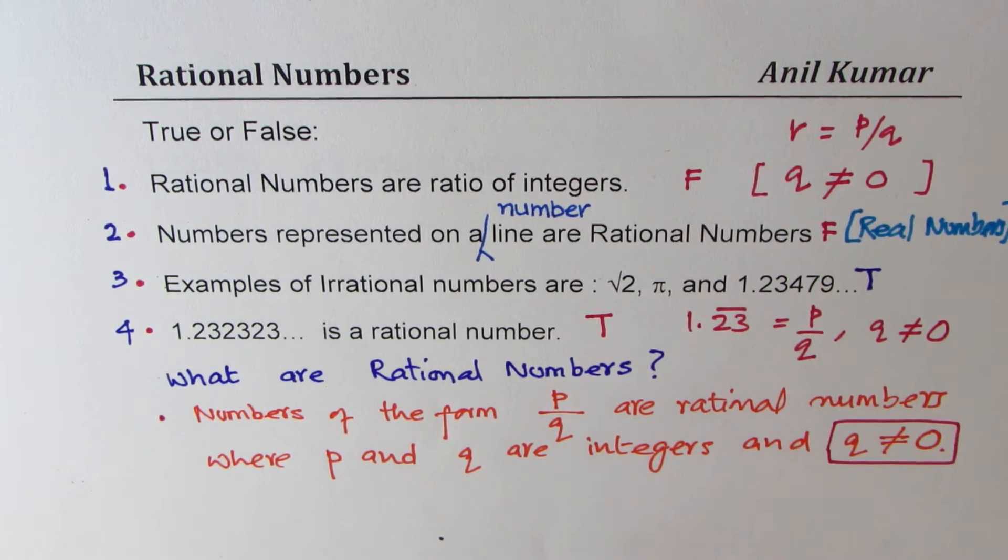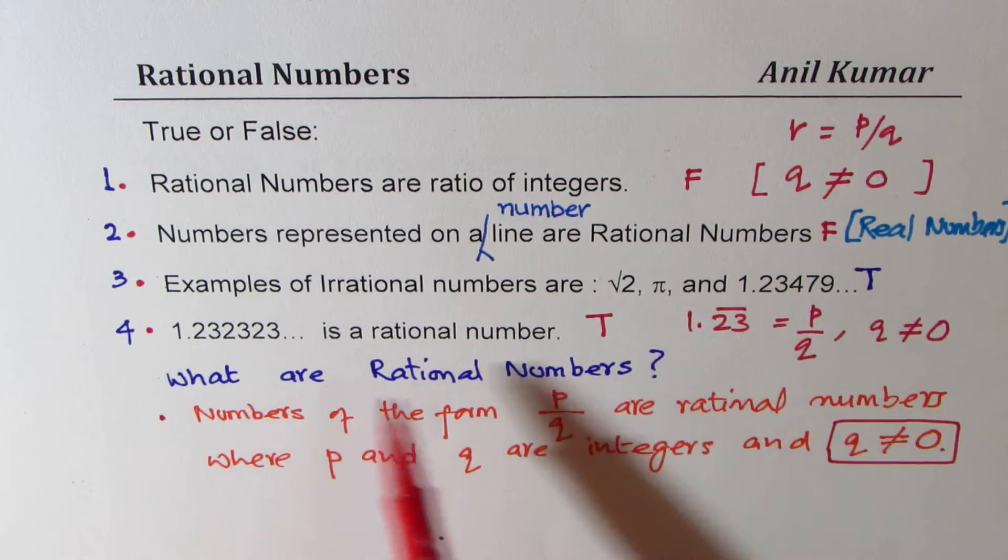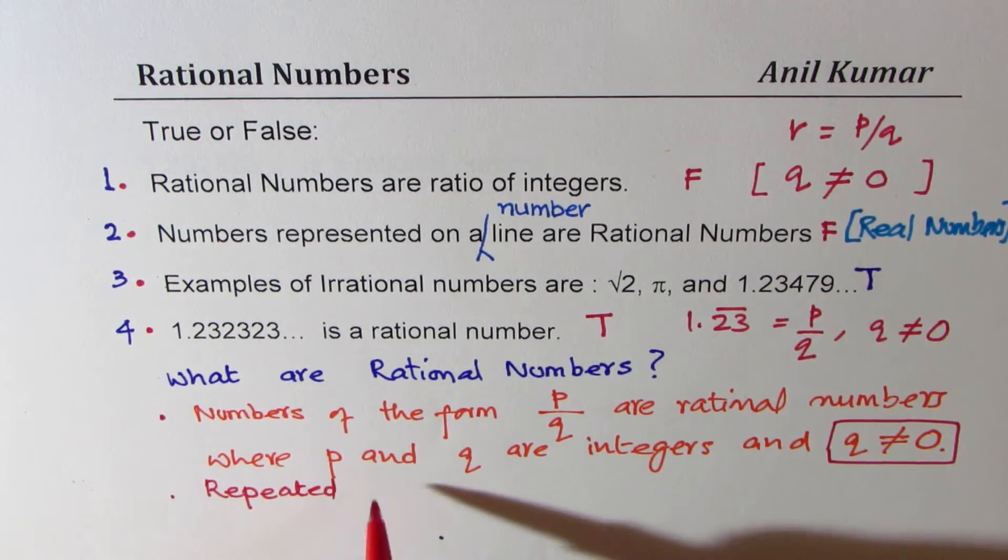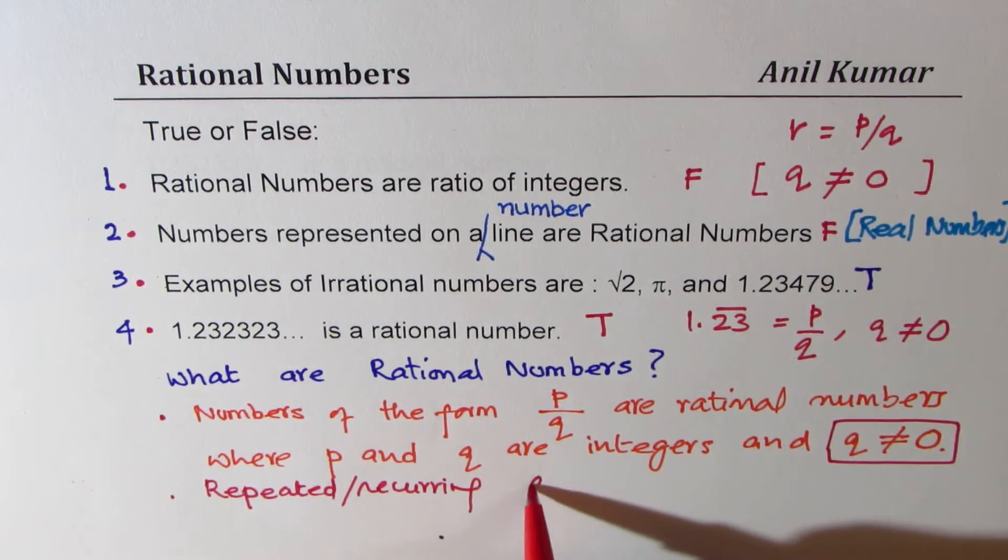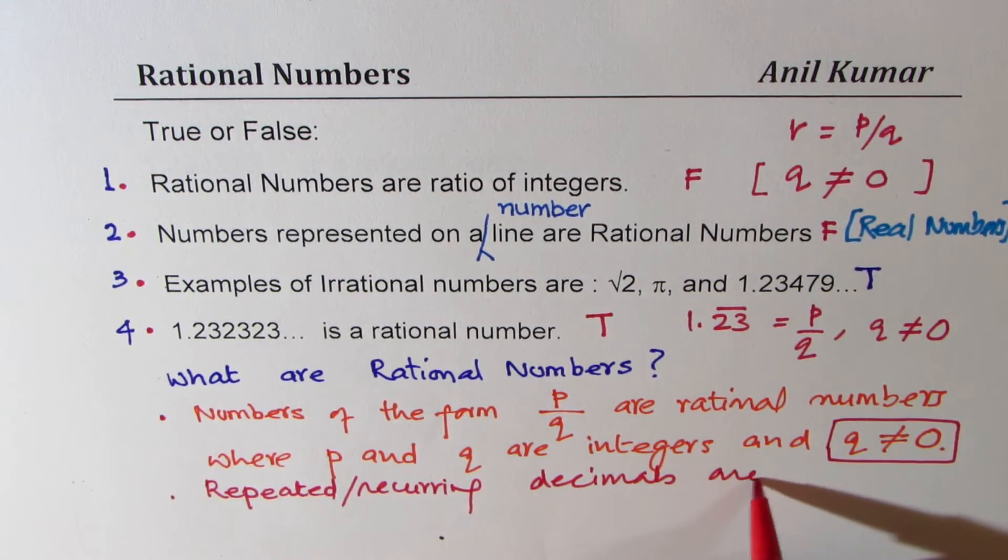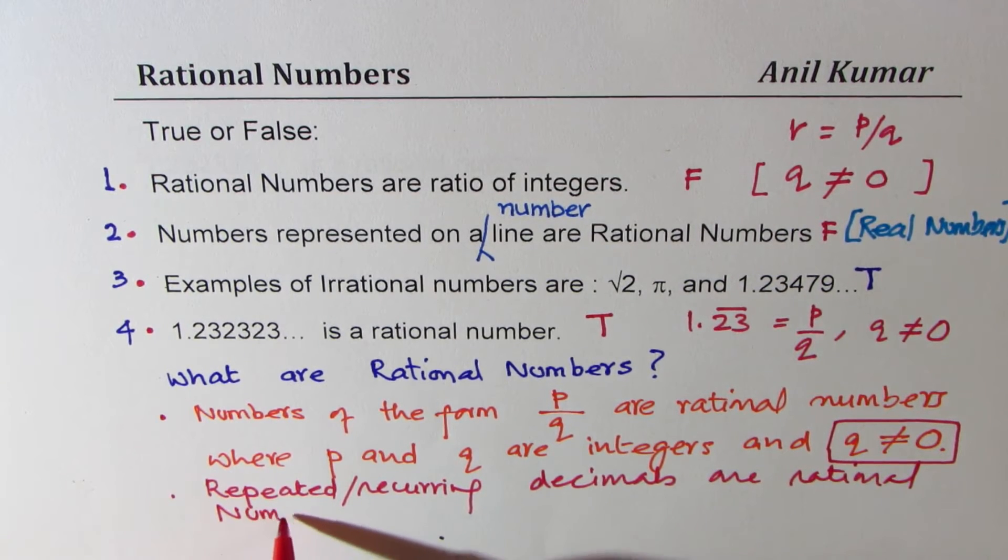So let's get to the process of learning how to write repeated numbers as rational numbers. So let me make a note here, which we learned, that is repeated or recurring decimal are rational numbers.